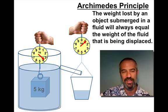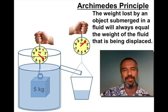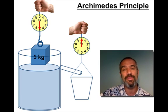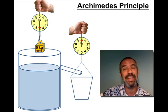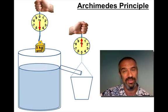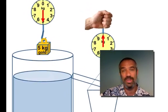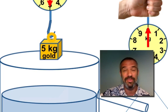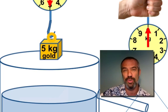Now that was a fairly large object there — 5 kg. We're going to redo this now using 5 kg of a much denser material, namely gold. One thing you should notice right off the bat is 5 kg of gold is a much smaller volume than that previous block. Because gold is so dense, 5 kg doesn't take up much room.